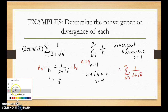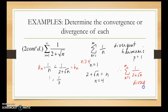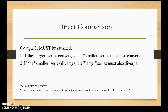To summarize: if the larger series converges, the smaller series must also converge. If the smaller series diverges, then the larger series must also diverge.